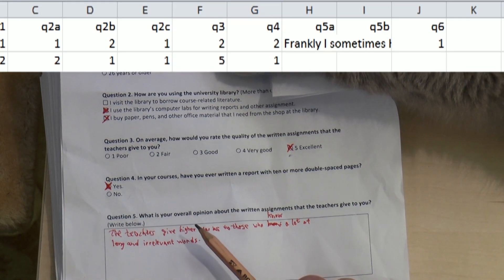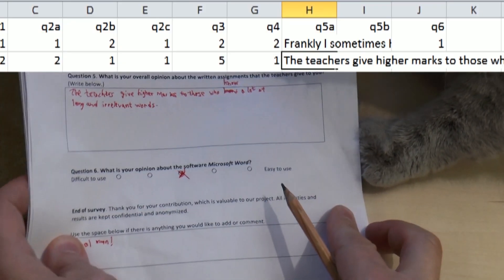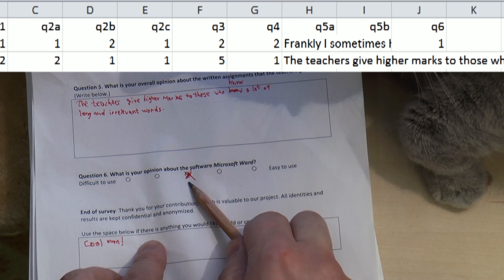For Q5 I just type in whatever the respondent has written by hand. Question 6, finally, is coded with a 3.